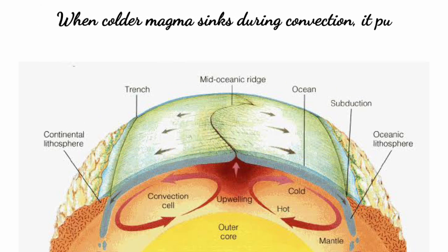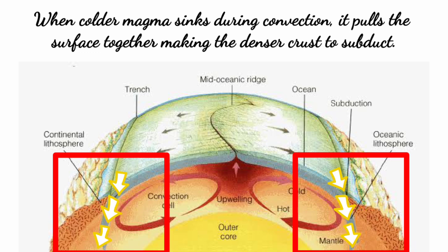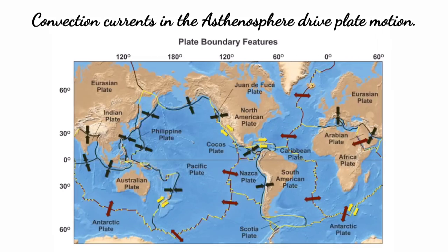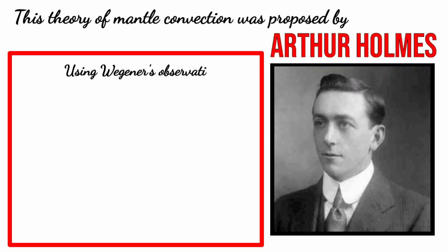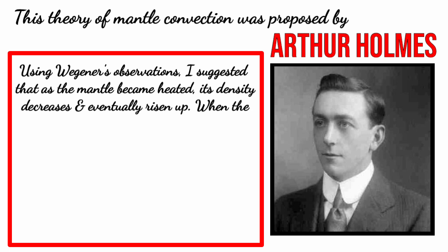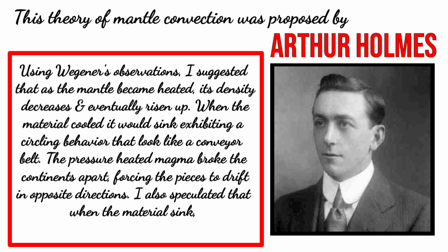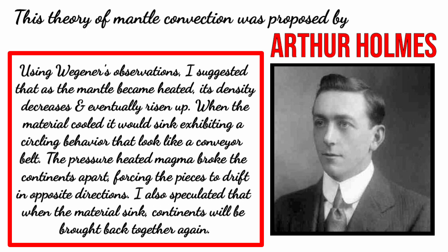When colder magma sinks during convection, it pulls the surface together, making the denser crust subduct. Convection currents in the asthenosphere drive plate motion. This theory of mantle convection was proposed by Arthur Holmes. According to him, as the mantle became heated, its density decreases and it eventually rises. When the material cooled, it would sink, exhibiting a circling behavior that would look like a conveyor belt. The pressure-heated magma broke the continents apart, forcing the pieces to drift in opposite directions. He also speculated that when the materials sink, continents will be brought back together again.